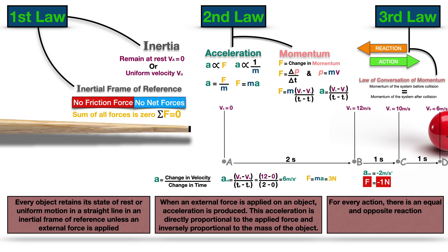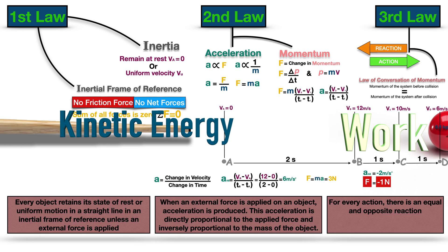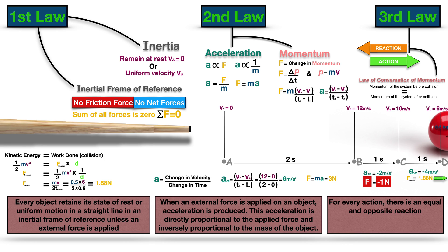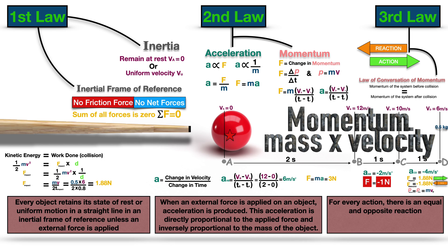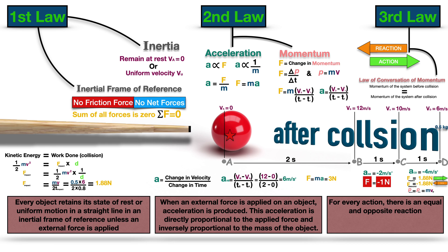In order to calculate the impact force, we need to recall the concept of energy and work. Impact force is considered as the result of conversion of kinetic energy into work done. Assuming kinetic energy is fully converted into work, the value of kinetic energy equals the value of work done at collision. We know the mass is 0.5 kg, the velocity at point D just before collision is 6 meters per second, and the duration of impact was 0.8 seconds. With this information we can calculate the impact force, which will be equal to 1.88 newtons. This impact force is the action, and as a reaction the ball will rebound with the same force of 1.88 newtons but in the opposite direction. Just before collision, the momentum of the ball is mass times velocity at point D, which equals 3 kg·m/s. According to the law of conservation of momentum, the momentum of the ball after collision will also be 3 kg·m/s.